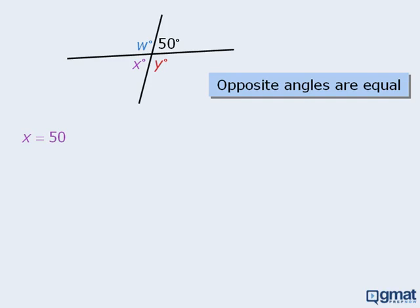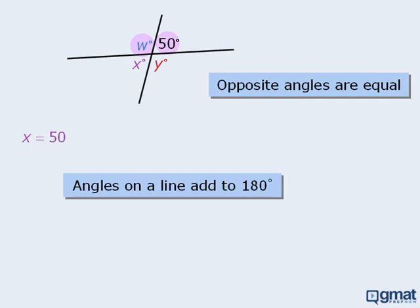Now let's find the value of w. Here these two angles are angles on a line. Since two angles on a line must add to 180 degrees, we can conclude that w plus 50 must equal 180. From here we can subtract 50 from both sides to see that w must equal 130.